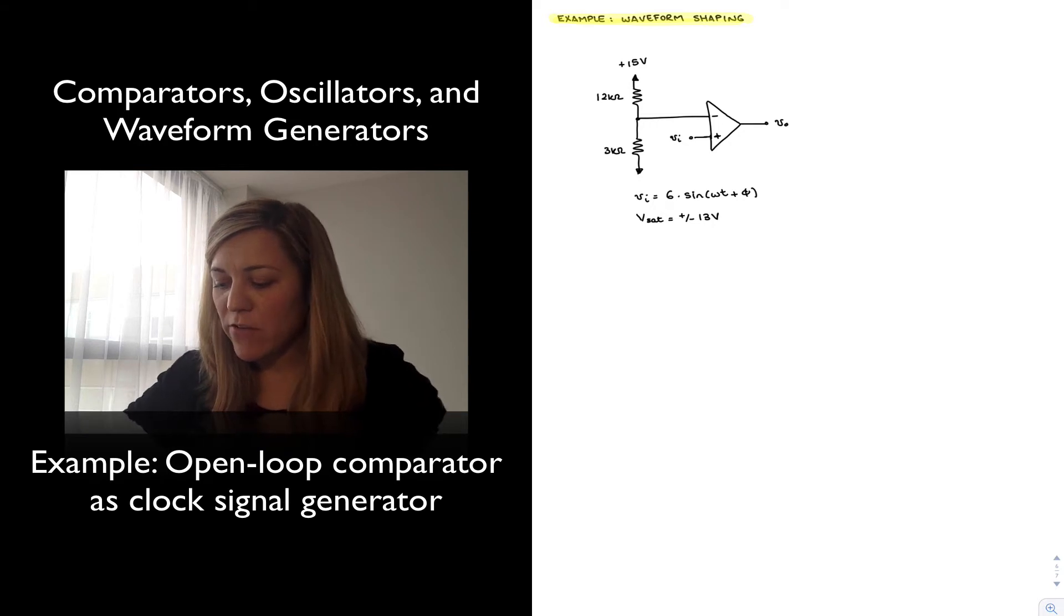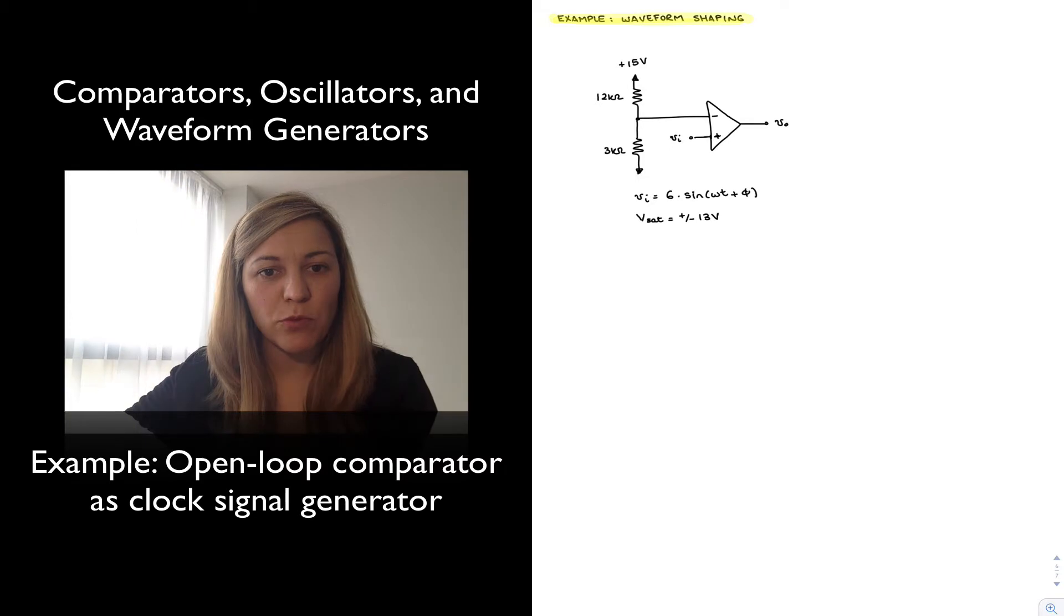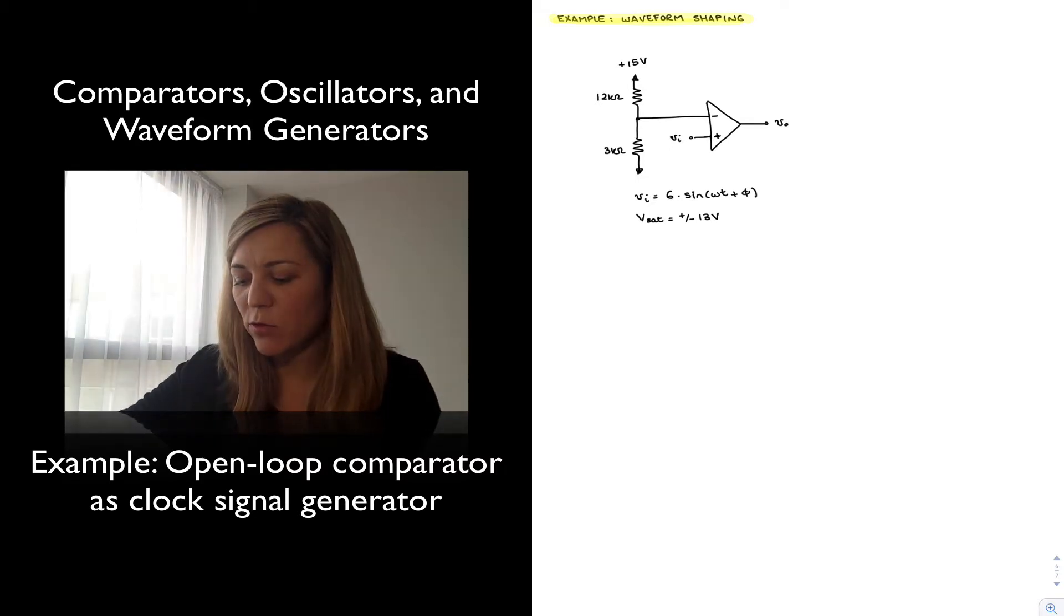Let's imagine that we have an op-amp connected in open loop where we're applying the input signal to the positive input terminal, so it's a non-inverting comparator configuration, and then we apply a reference voltage to the negative input terminal which is set via voltage division from a 15 volt supply.